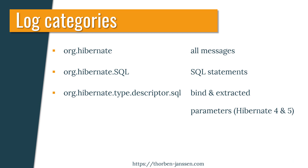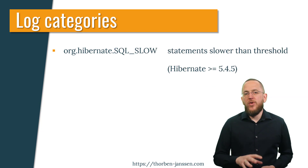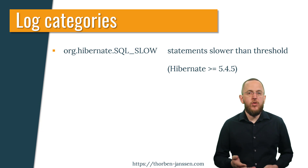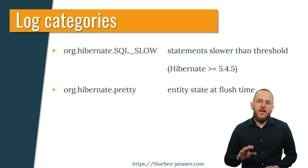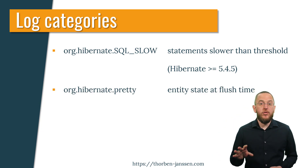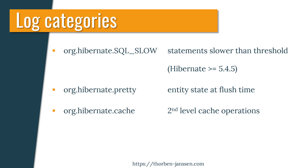In version 4 and 5, Hibernate writes the values bound to the JDBC parameters and extracted from the JDBC results to the org.hibernate.type.descriptor.sql category. You should use this category together with org.hibernate.sql to also log the SQL statements. Since version 6, Hibernate writes the values bound to the JDBC parameters to the org.hibernate.orm.jdbc.bind category. You should use it together with org.hibernate.sql to also log the SQL statements. In version 5.4.5, Hibernate introduced the slow query log. It writes all SQL statements that took longer than the configured threshold to the org.hibernate.sql_slow category.